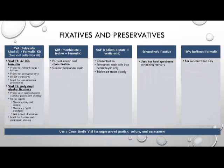The fixatives and preservatives used in the clinical laboratory include PVA formalin — PVA stands for polyvinyl alcohol. The first vial of this two-vial collection kit is 5-10% formalin, which is used to preserve helminth eggs and larvae as well as protozoan cysts. It's used for direct wet mounts and is ideal for concentration procedures. In vial 2, the polyvinyl alcohol fixative preserves trophozoites and cysts for permanent staining. The fixing agents used are mercury, zinc, and copper. While mercury is the gold standard, zinc is the best alternative. This vial is best for permanent staining.